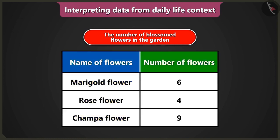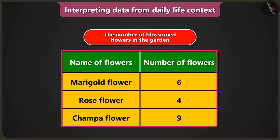Now read the second column. What is the number of flowers? The number of marigold flowers is six. The number of rose flowers is four and the number of chumpa flowers is nine. The data collected about the number of blossom flowers in the garden has been shown in this table.